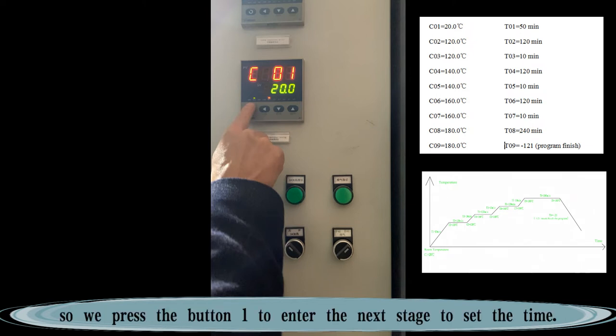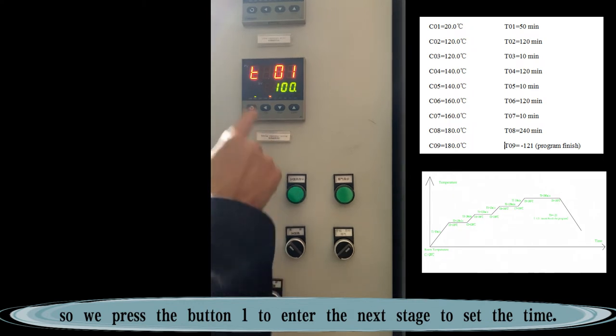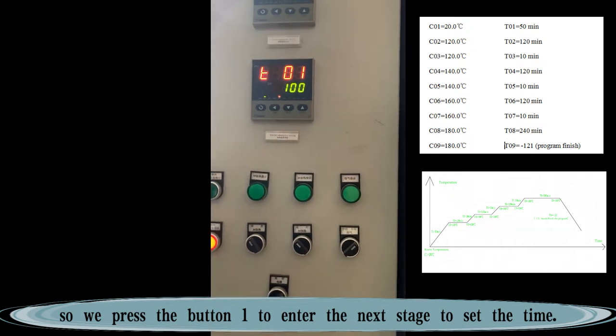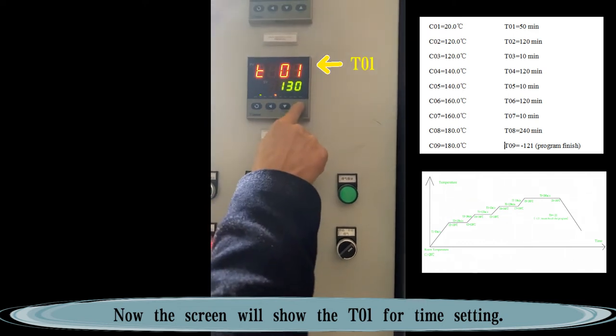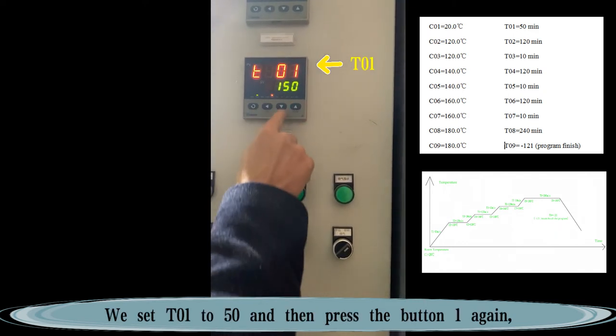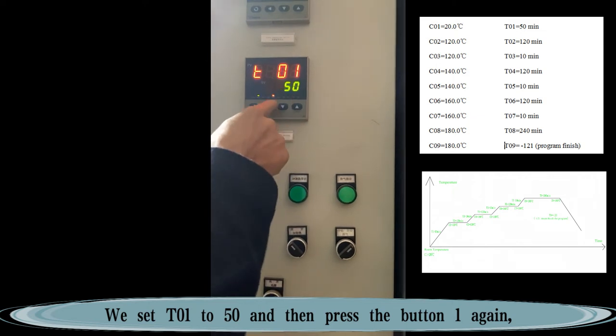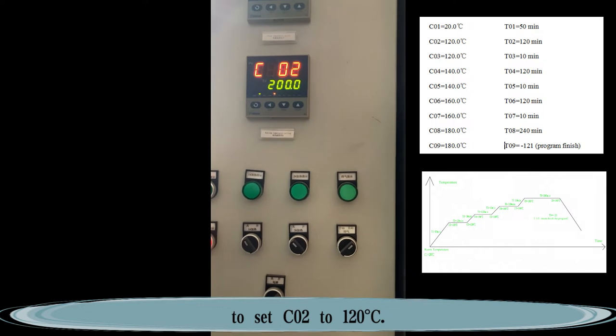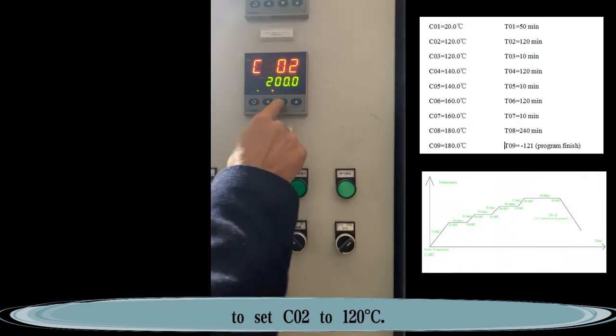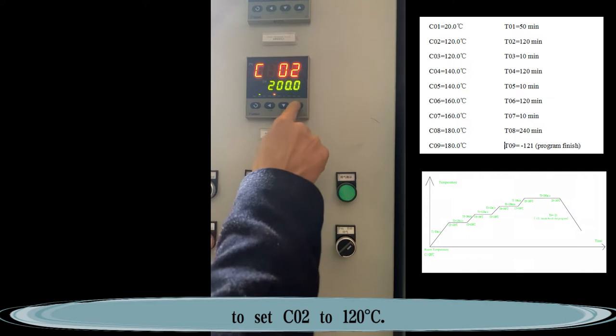So we press button 1 to enter the next stage to set the time. Now the screen will show TO1 for time setting. We set T1 to 50 and then press button 1 again to set CO2 to 120 degrees Celsius.